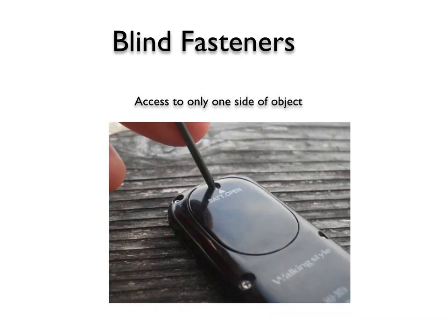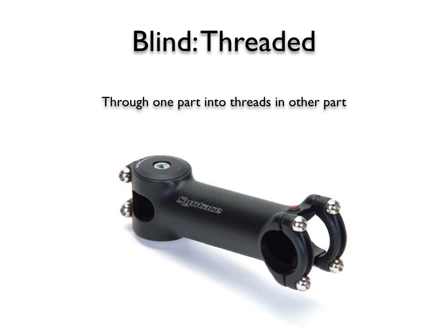The first category is blind fasteners, which means that you only have access to one side of the object. Breaking that down further, we have blind threaded fasteners and also blind unthreaded. A blind threaded fastener goes through one part and into threads on the second part. You can see here on this bicycle headset part, the chrome-looking bolts on the far right — those screws go through the U-shaped retainer thing and into the larger piece of metal, into threads. The threads on the fasteners must match the threads in the material that they are being fastened to.